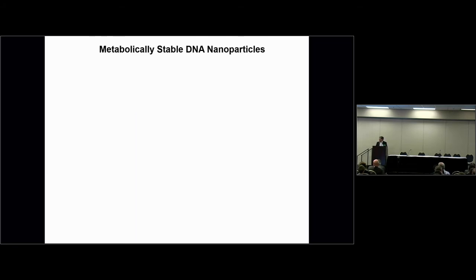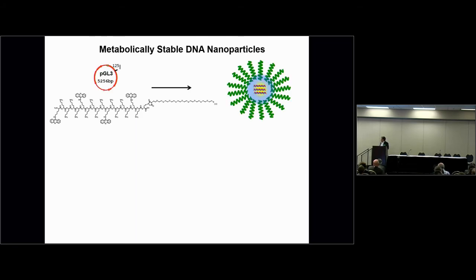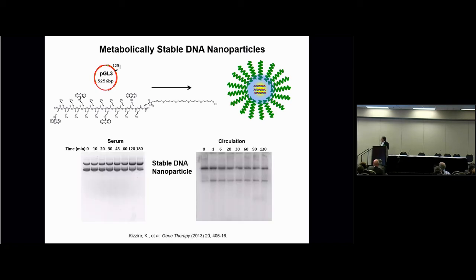Looking at the metabolic stability of DNA nanoparticles: a radioactive DNA nanoparticle made with the optimal peptide leads to in vitro stability and a couple hours of circulatory stability in the animal. This is pharmacokinetic data where DNA is extracted back, run on a gel, and autoradiographed. With the right treatment in terms of expression, you can show that those nanoparticles express luciferase for long periods and circulate up to four hours in animals.